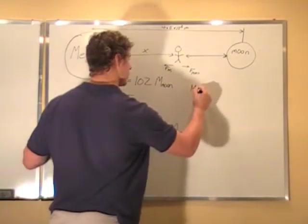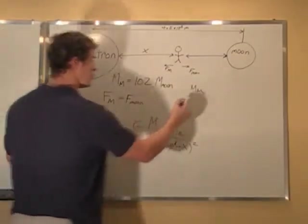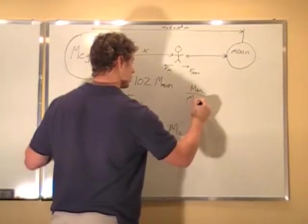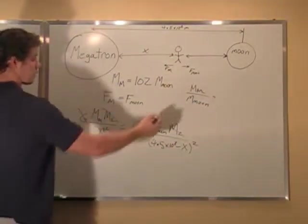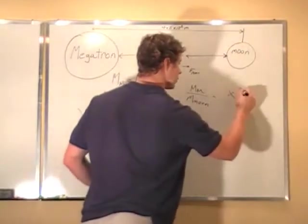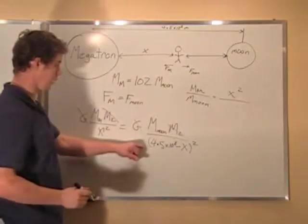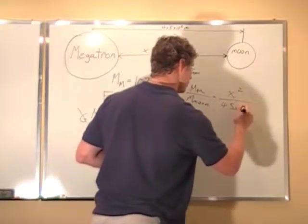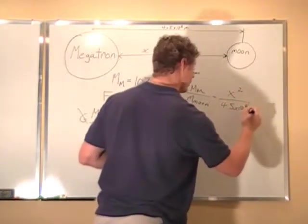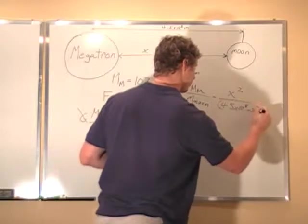So we have mass of Megatron, divide mass of the moon over here. And I've multiplied X squared up here. And this is still on this side. 4.5 times 10 to the 8 minus X, all squared.